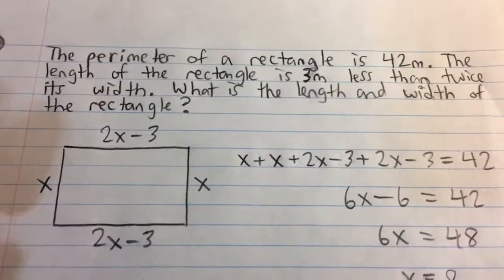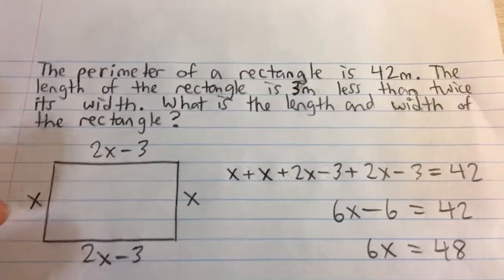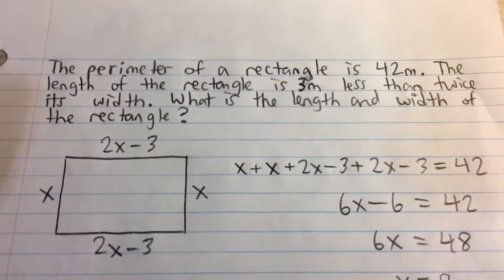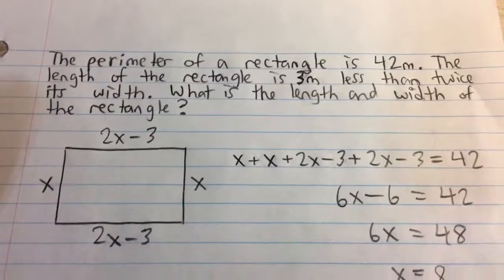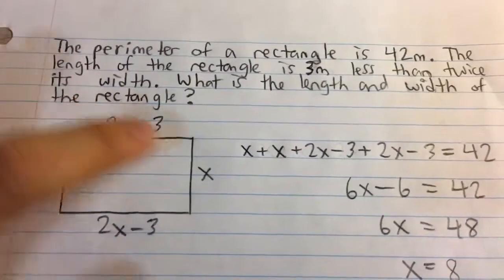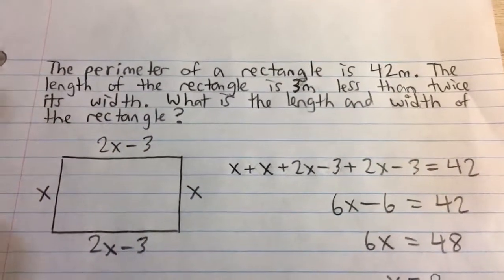And so we can use these four sides because we know that the perimeter of a rectangle is the sum of the length of the four sides. And so if we take the sum of all of this, that will be equal to 42 meters.